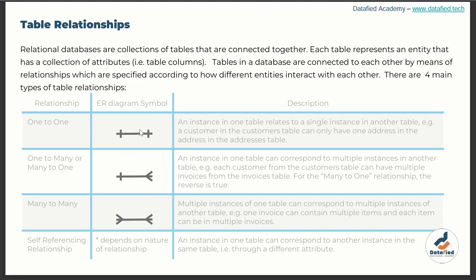What makes a database relational is the connection of tables in such a database. Because we have tables being connected, and this connection cannot happen if they are not related, the connectedness of related tables is what actually informs the name 'relational databases.' The connection is done through relationships, and these relationships will be discussed here.